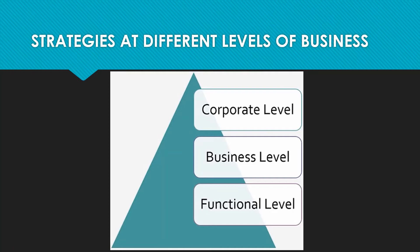You can do strategies at different levels of business. There are three levels: one is the corporate level, the second is the business level, and the third is the functional level. At the corporate level you think from the perspective of the company. At the business level, the main aim is to earn money or yield income. At the functional level, the people who actually perform the work take strategies to support the other two levels.